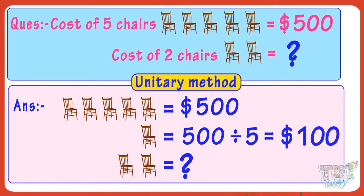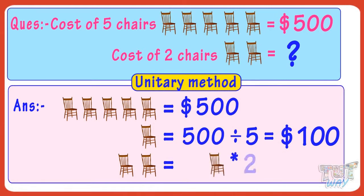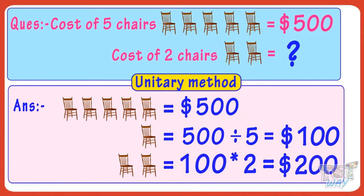So kids, now that we have calculated the cost of one chair, calculating the cost of two chairs is easy. Multiply the cost of one chair by 2 to get the cost of two chairs. 100 multiplied by 2 gives us 200. So the cost of two chairs is $200.